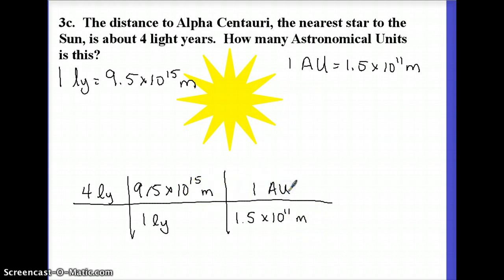And so if you look through, the light years cancel, the meters cancel, and I'm left with astronomical units, which is what I want. So I multiply 4 times 9.5 times 10 to the 15, divide by 1.5 times 10 to the 11. Be careful to use either the EE button or parentheses on your calculator when you do that. And you get about 253,000 AU. If you do that on your calculator, you'll see you get lots more threes—it's a repeating decimal. But we'll do some approximate significant figures and leave it like that.